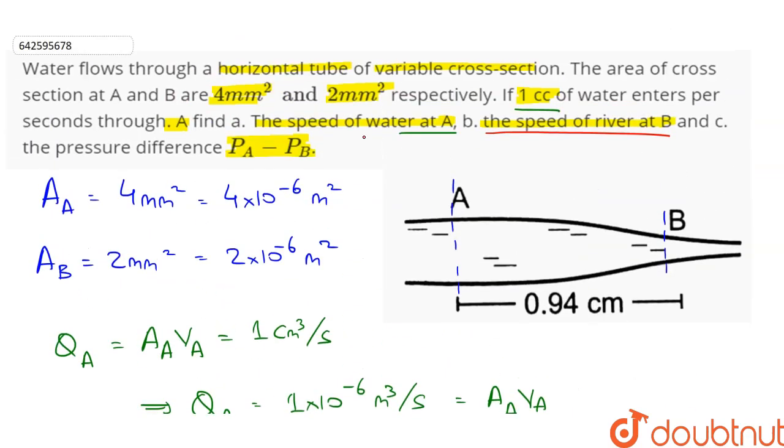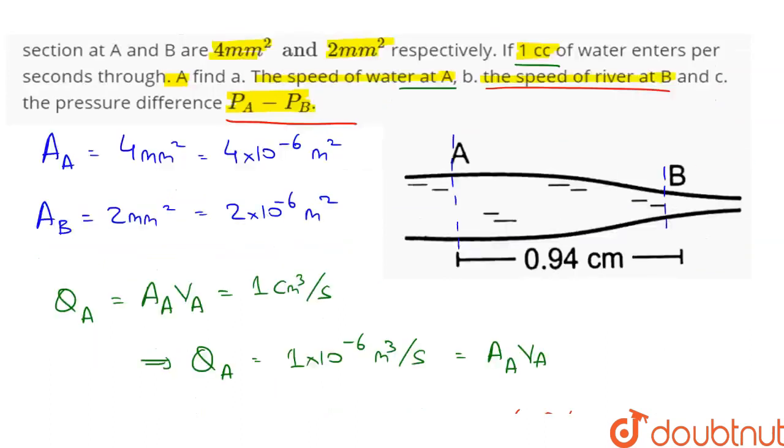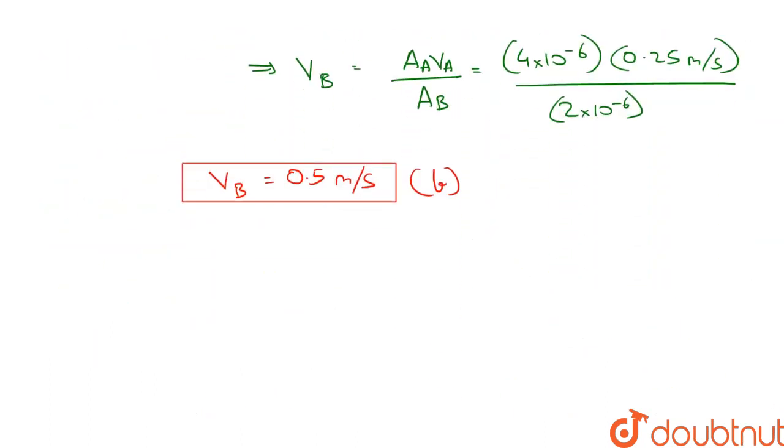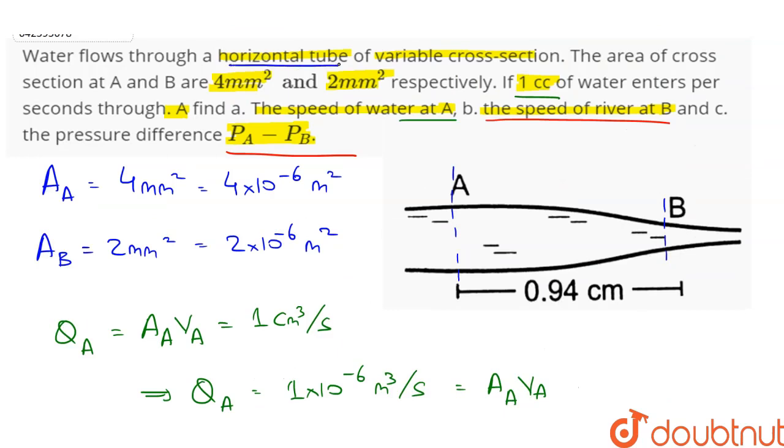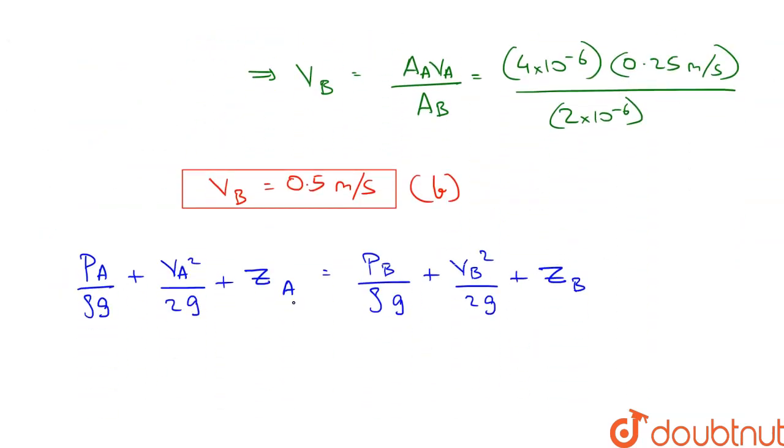In the C part, we need to find the pressure difference PA minus PB. So we can apply Bernoulli's theorem between A and B. So PA upon Rho G plus VA square upon 2 into G plus ZA is equal to PB upon Rho G plus VB square by 2G plus ZB. Since the pipe is horizontal, therefore ZA will be equal to ZB and they can be cancelled.